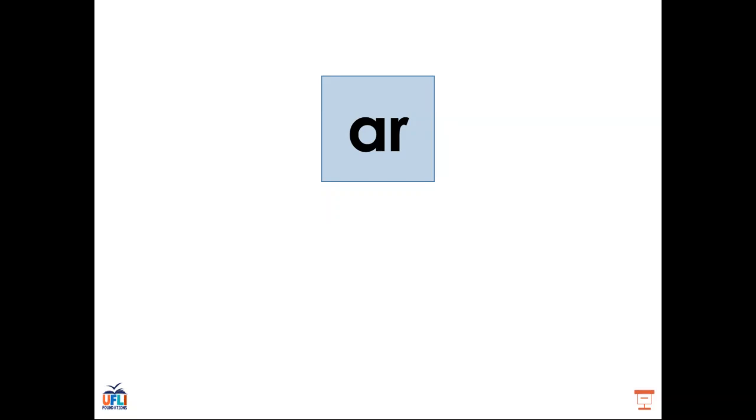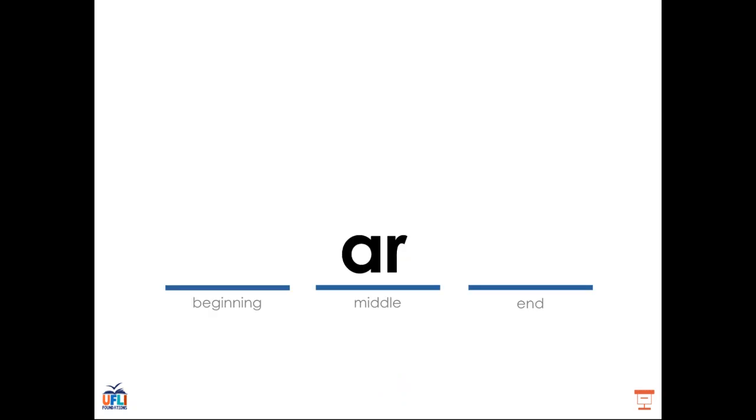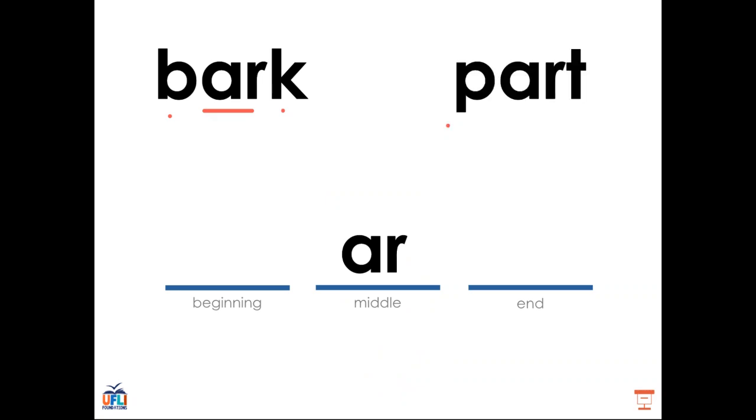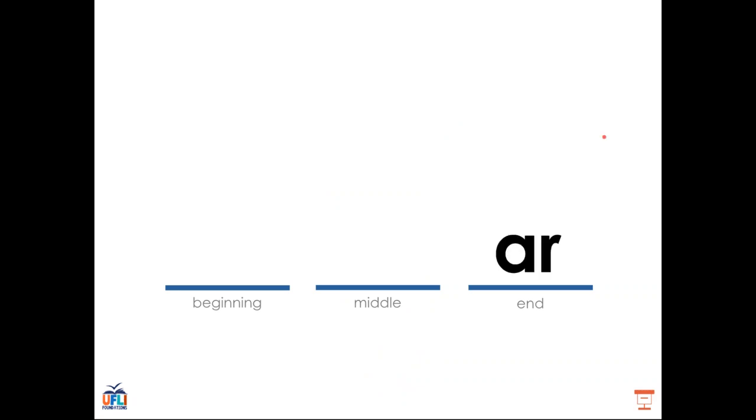So far we've learned that AR comes together to make the sound R as in arm. AR, arm, R. We've learned that AR can appear in the middle of words like in bark or in part. We also learned that AR can appear at the end of words as in far or in star.